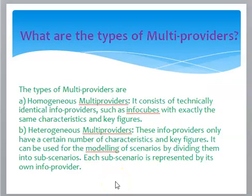What are the types of multi providers? The types of multi providers are: homogeneous multi providers, which consist of technically identical info providers such as info cubes that share the same characteristics and key figures; and heterogeneous multi providers, where the info providers only have a certain number of characteristics and key figures in common. Heterogeneous multi providers can be used for modeling scenarios by dividing them into two sub-scenarios, each represented by its own info provider.